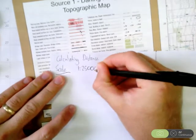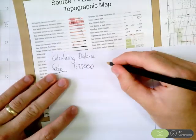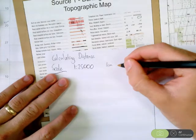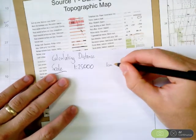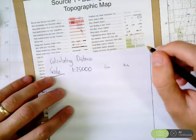The easiest thing to do is to calculate if you measure one centimetre, how many kilometres does this represent? It's a very quick way to work out all distances.